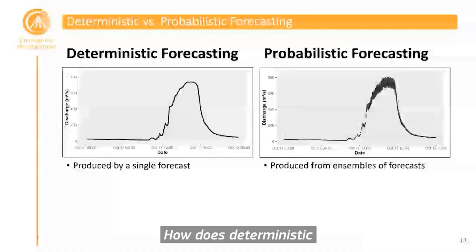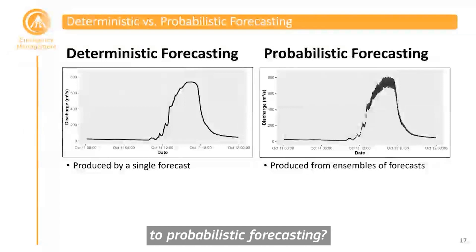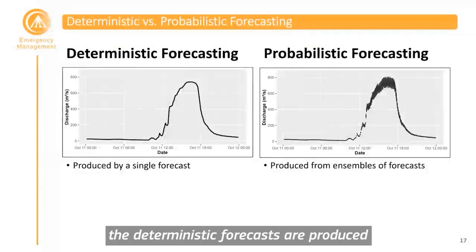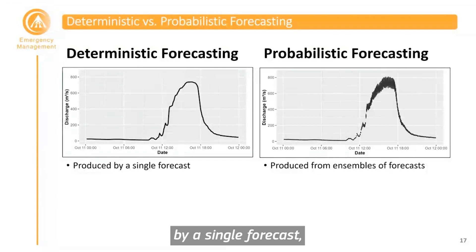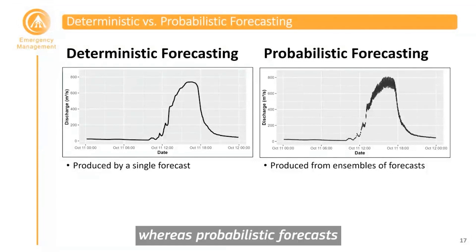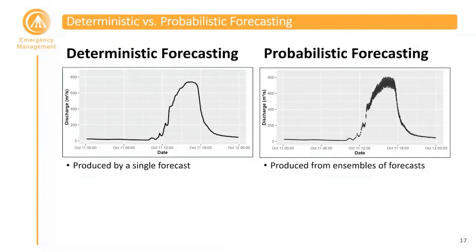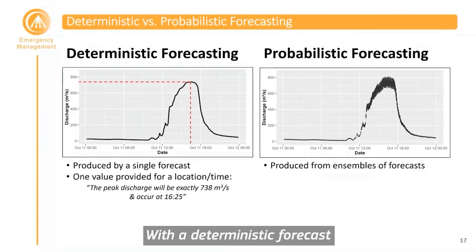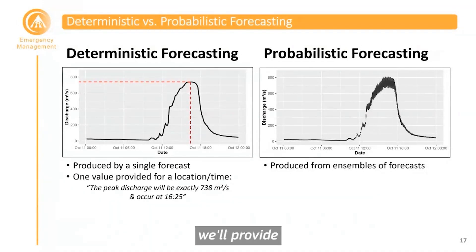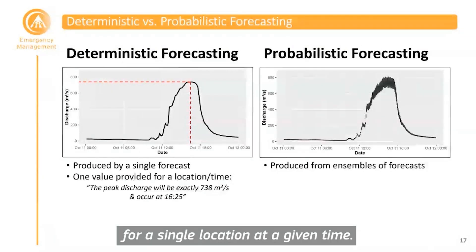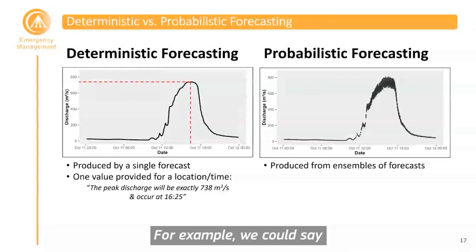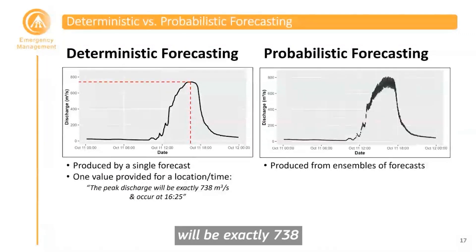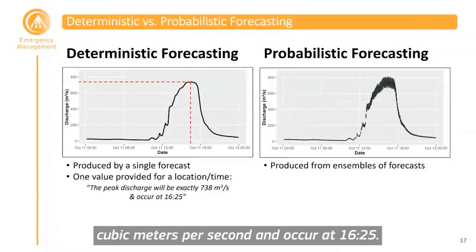How does deterministic forecasting compare to probabilistic forecasting? Deterministic forecasts are produced by a single forecast, whereas probabilistic forecasts are produced from ensembles of forecasts. With a deterministic forecast, one value is provided for a single location at a time — for example, the peak discharge will be exactly 738 cubic meters per second and occur at 4:25.